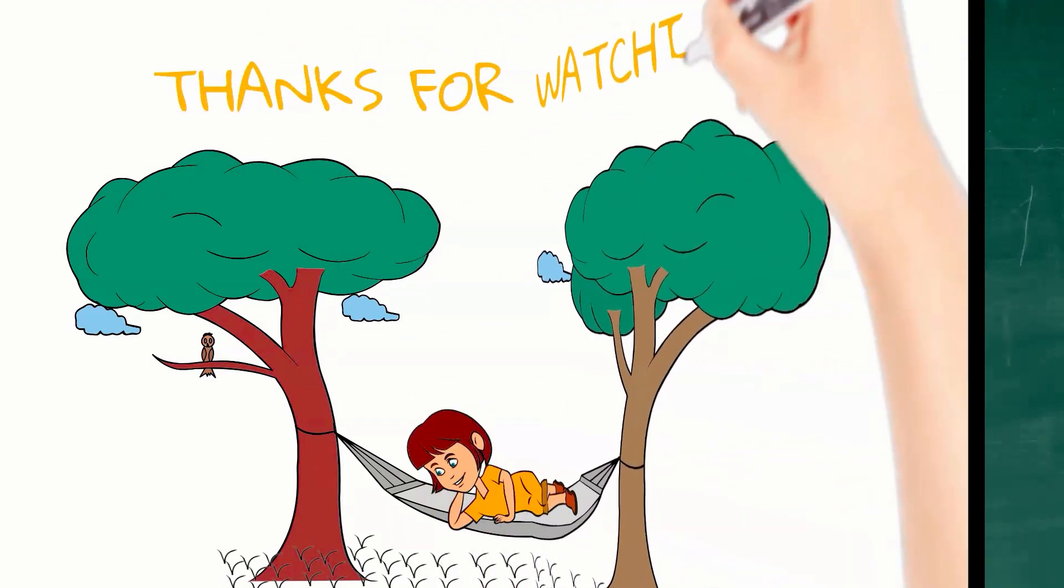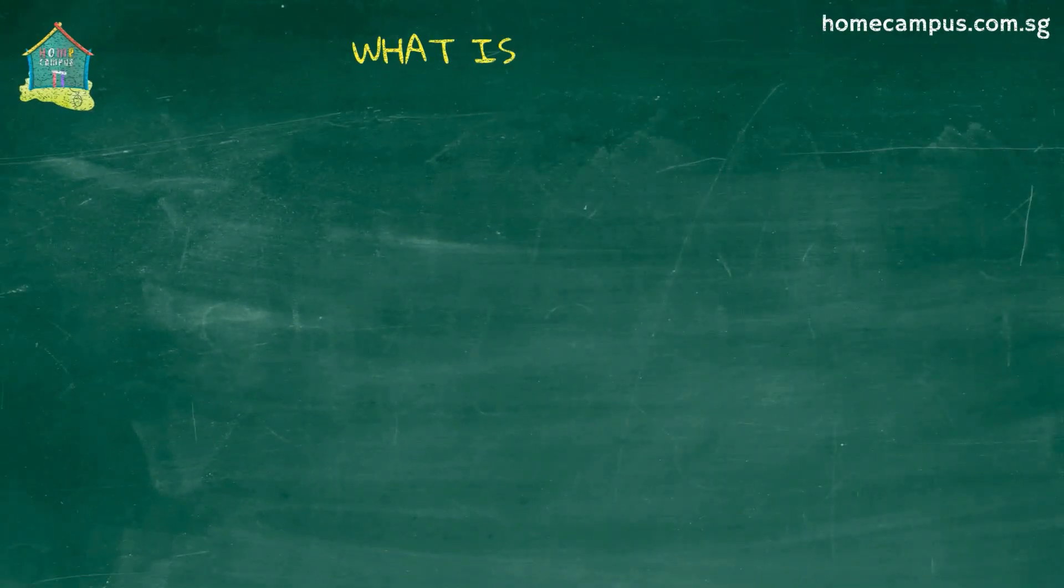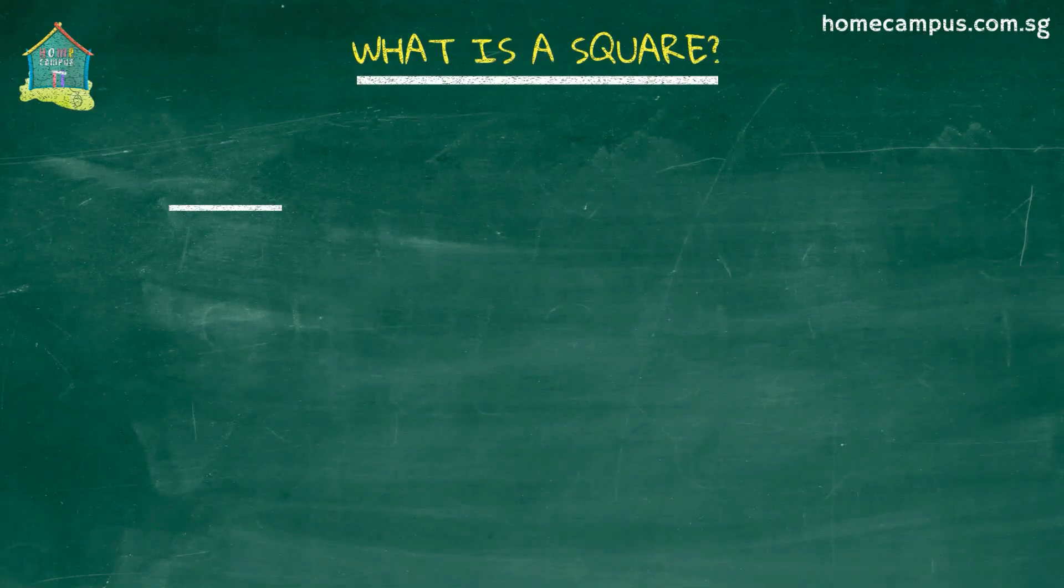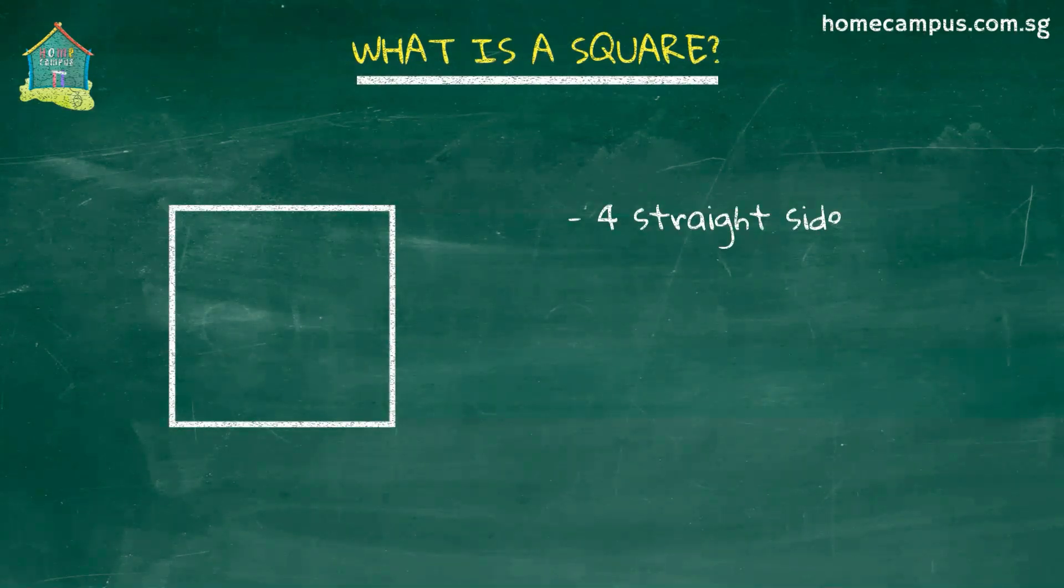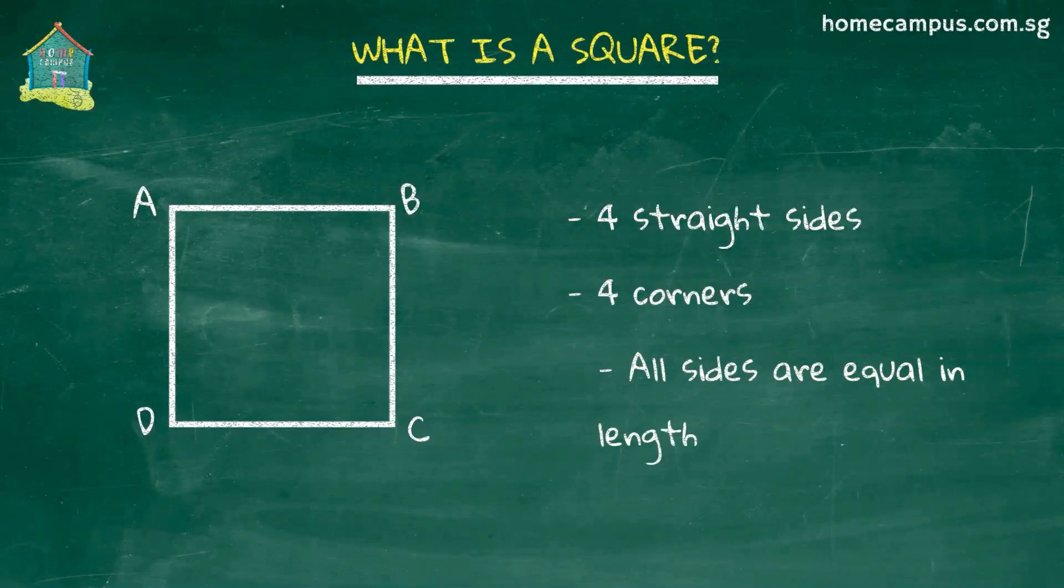So what is a square? A square is a shape with four straight sides and four corners. All sides of a square are of equal length. Let's look at these properties in some detail.